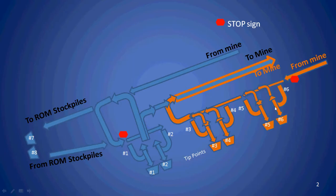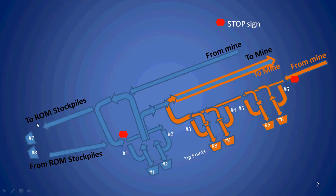If all tip points are occupied, a truck might come down, reverse tip, then go back out the same road to the mine. In the simulation, two things are occurring: first, defining where trucks can tip — waste trucks can tip into a crusher and conveyor system, and ore trucks can dump into a crusher and onto a conveyor system. Alternatively, trucks can dump at the run of mine stockpiles.